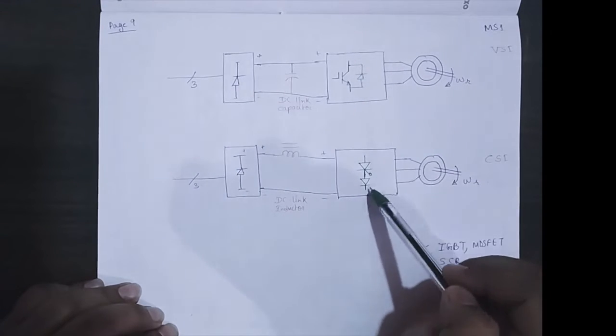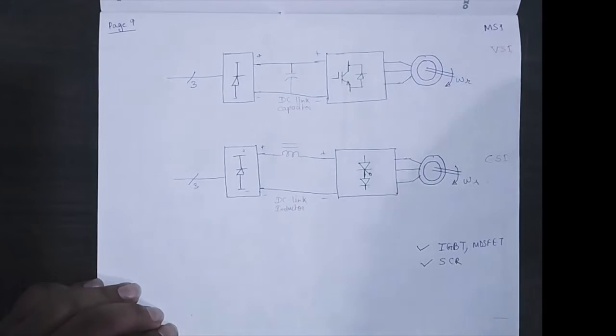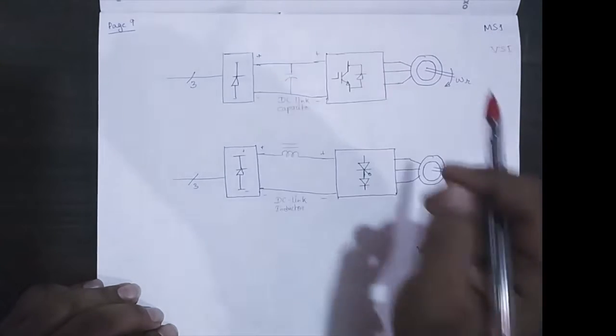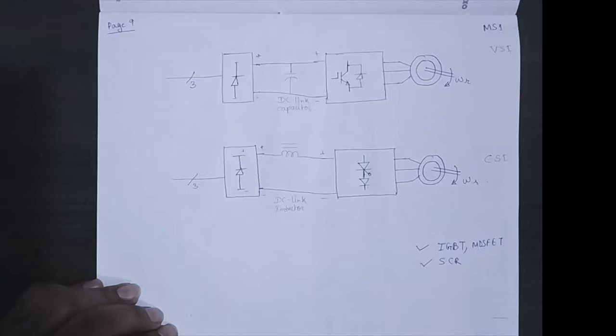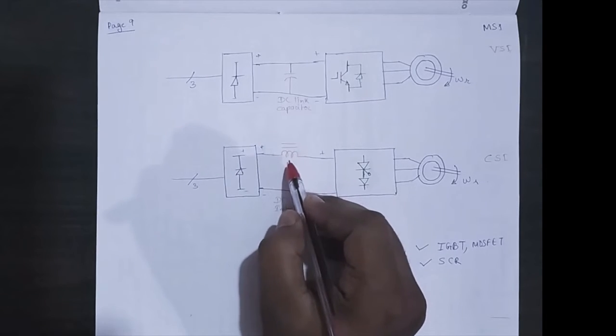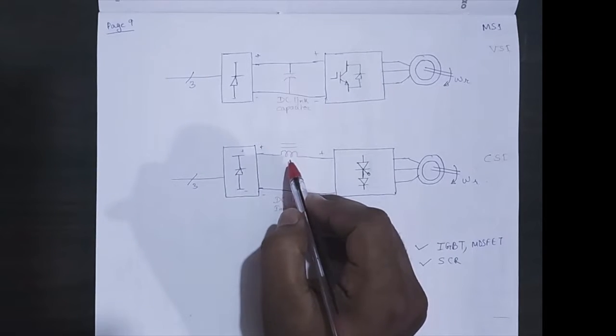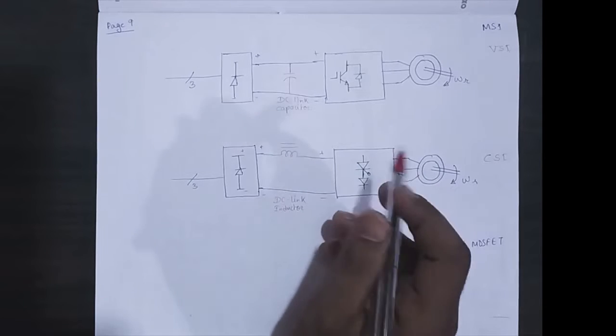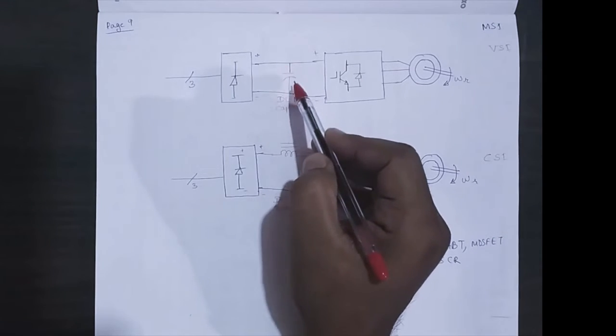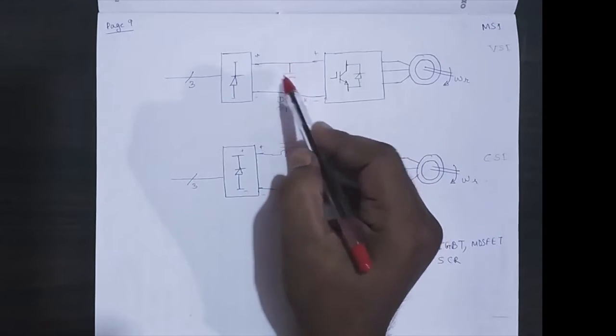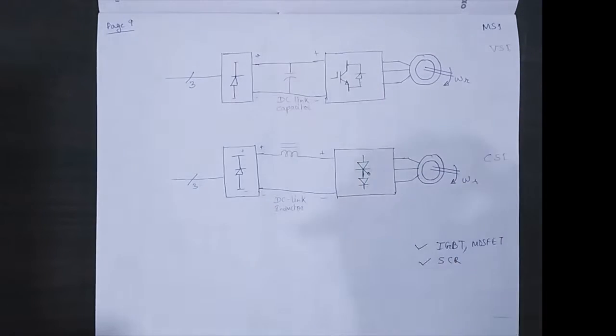So this is the difference between VSI and CSI. In VSI there is a capacitor, in CSI this is an inductor. In VSI you have an anti-parallel diode connected with the switch, and in CSI you have a series connected diode with the switch.